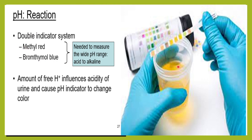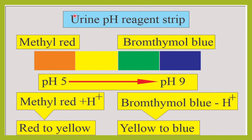The amount of free H⁺ ions in the urine will affect the color on the strip. In the double indicator strip, methyl red and bromothymol blue are both present. When urine is more acidic, it changes to a reddish color due to interaction with methyl red. As it becomes alkaline, it gives a greenish to bluish tinge due to the interaction with bromothymol blue.